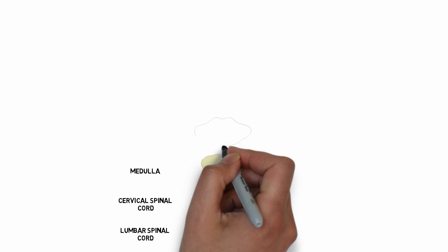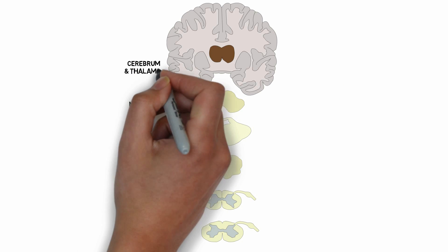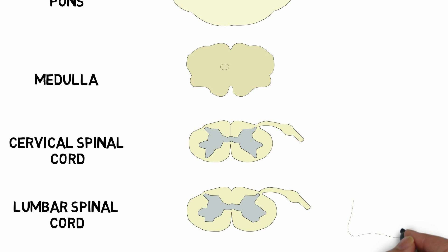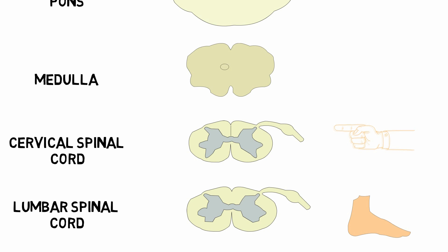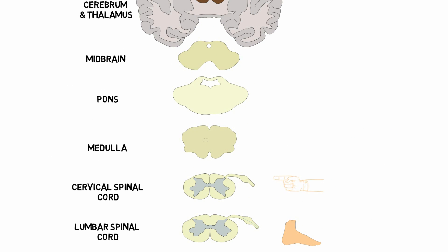Here you see multiple cross-sections of spinal cord from the lumbar spinal cord up to the midbrain, and a section of the cerebrum and thalamus. The spinothalamic tract begins when nerve fibers from the upper and lower parts of the body enter the spinal cord at their respective levels. Nerve fibers from the lower part of the body enter at the lumbar spinal cord, form synapses in the Rexed laminae, and 2nd order neurons arise which cross to the opposite side and travel up to the thalamus.